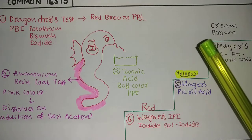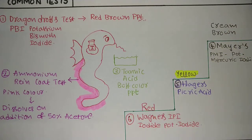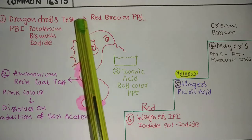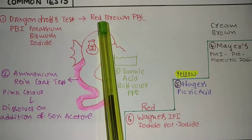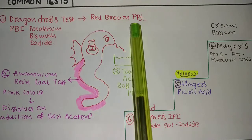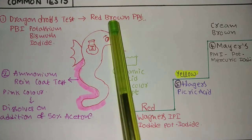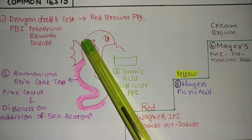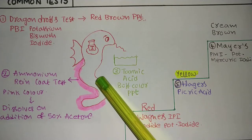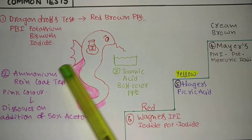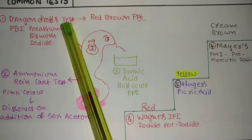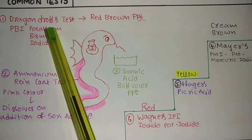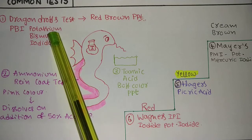The first one is Dragendorff's test. Dragendorff's test gives a red-brown precipitate with alkaloids — that's why I used red color here. See the dragon in red color. Dragendorff's test gives a red color result. What is the Dragendorff reagent chemically? That is also very important — not only the color, but the chemical composition.